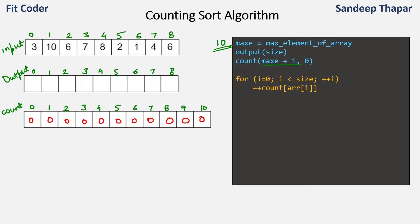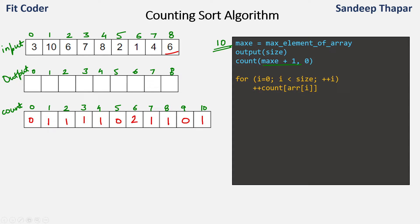In the next step we count the frequencies of elements in the input array and place them in the count array. We have 3 → count[3]=1, then 10 → count[10]=1, then 6 → count[6]=1, then 7 → count[7]=1, then 8 → count[8]=1, then 2 → count[2]=1, then 1 → count[1]=1, then 4 → count[4]=1, and then another 6, so count[6] increments to 2. We have now counted all elements and placed them in the count array.